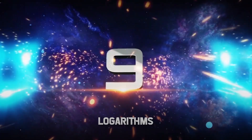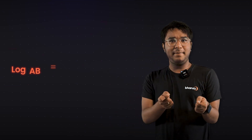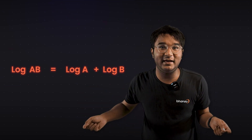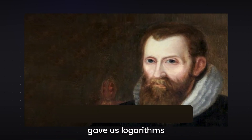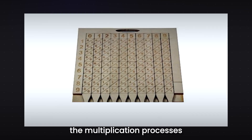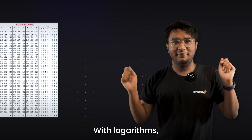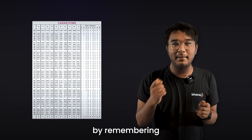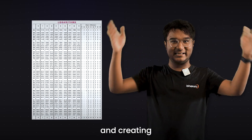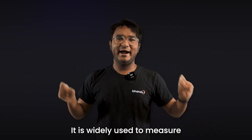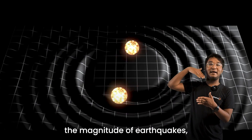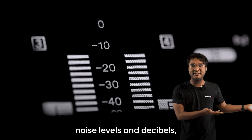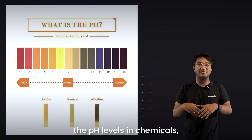Coming up next is number 9: Logarithms. Log AB equals log A plus log B is an inverse understanding of what exponents are. John Napier gave us logarithms to make multiplication processes easy. With logarithms, you can easily do long calculations by remembering and applying logarithmic values. It is widely used to measure the magnitudes of earthquakes, noise levels in decibels, the pH level in chemicals, and much more.